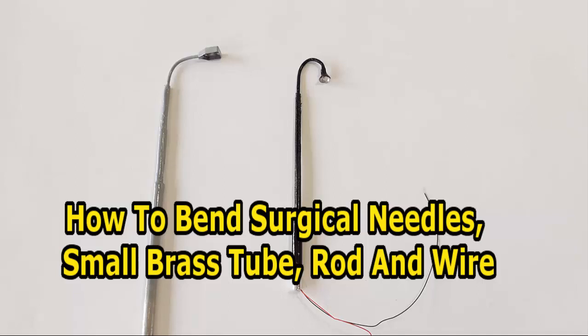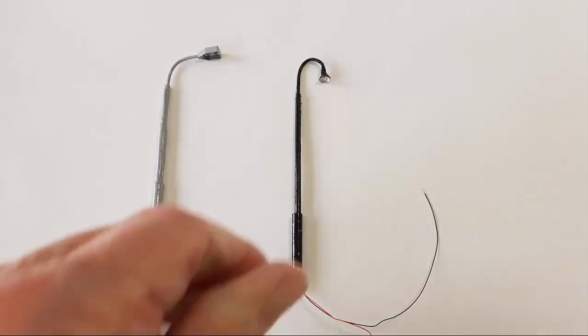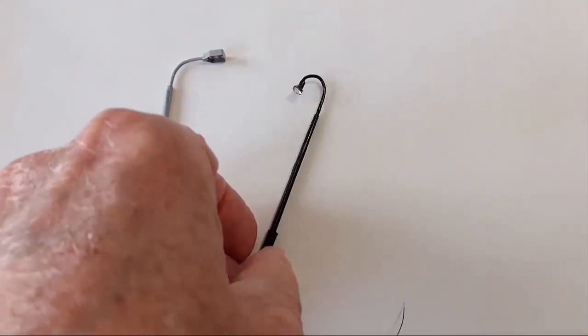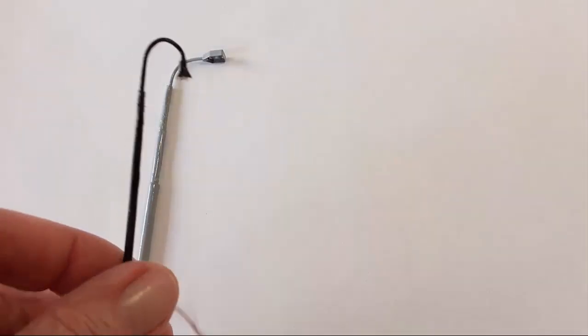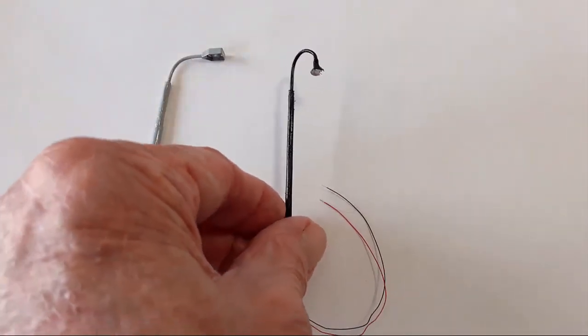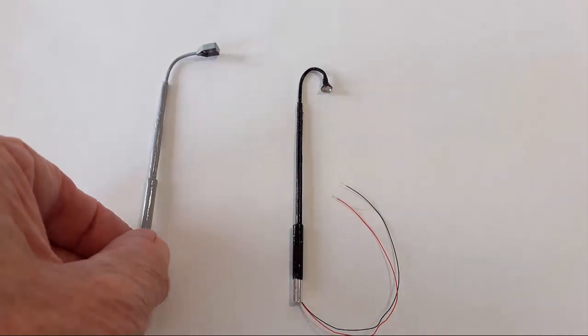In this video, I will show you how to bend surgical needles to be used to make scale model lamps. For example, these are scale street lamps that use micro SMD LEDs as the lighting source.